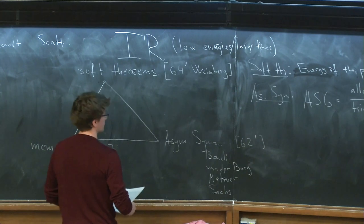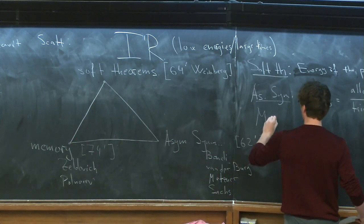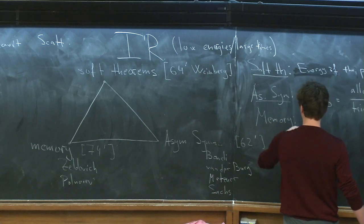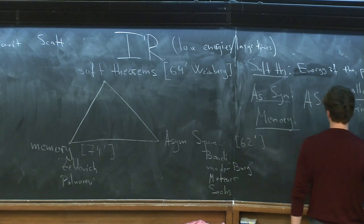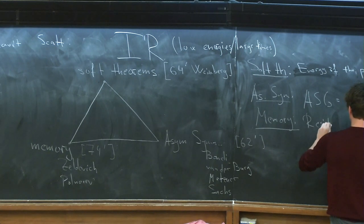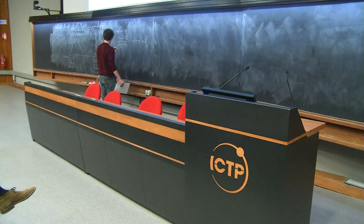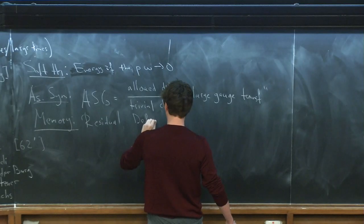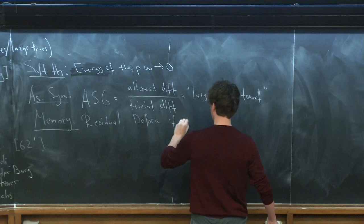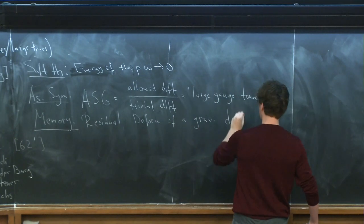The third corner is the memory effect. The relevant paper here is from 1974 by Zildovich and Polnarev, at least in the gravity context. This describes the residual deformation of a gravitational detector — specifically, the residual deformation of a gravitational detector after a gravitational wave has passed.